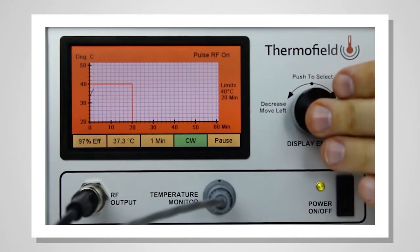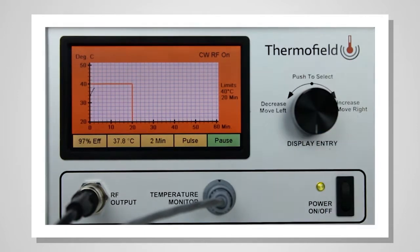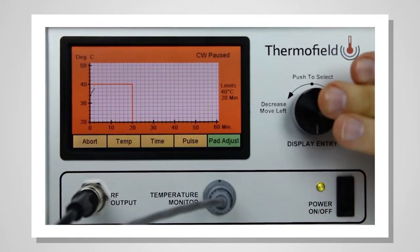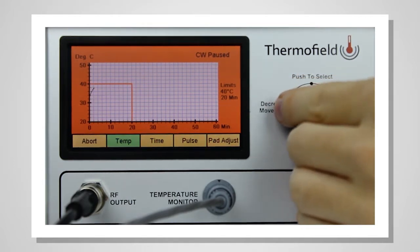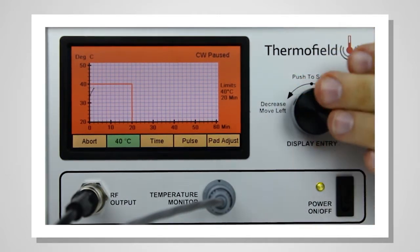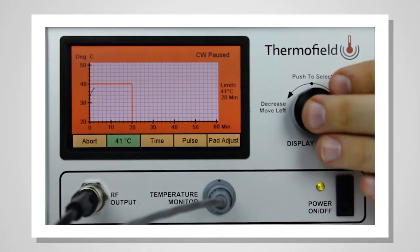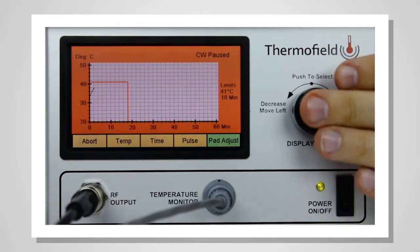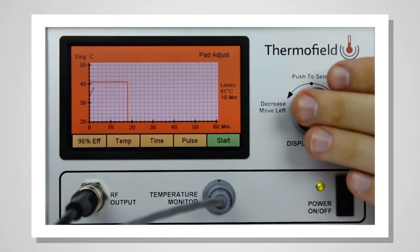To change the treatment temperature, time, or to adjust the pad, push the knob to pause the treatment and rotate the knob to select a pane to adjust. After adjusting the treatment, return to the PAD ADJUST pane. Push the knob to reach the best efficiency and push the knob again to continue the treatment.